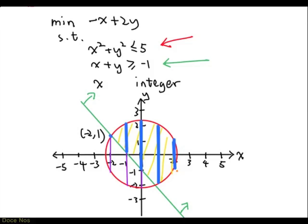There are also other points that give 0. For example, if x is 2 and y is 1, that also gives 0, and 2, 1 is also one of these blue points. In fact, if you draw the line minus x plus 2y equal to 0, this is what you get. Now the question is, can we get something smaller than 0?